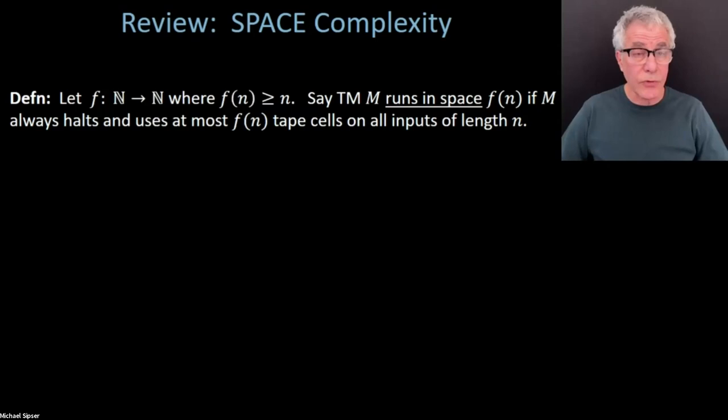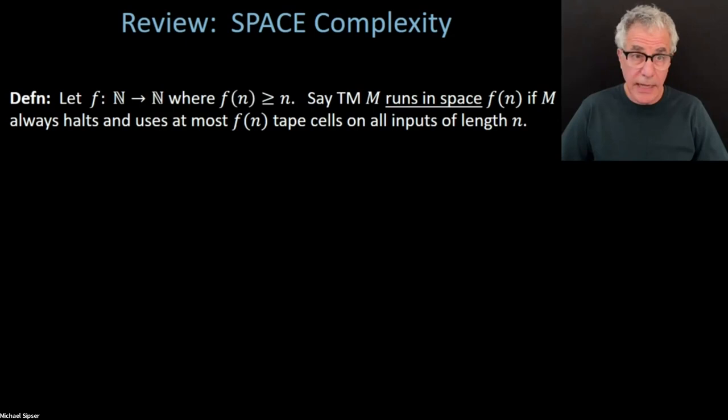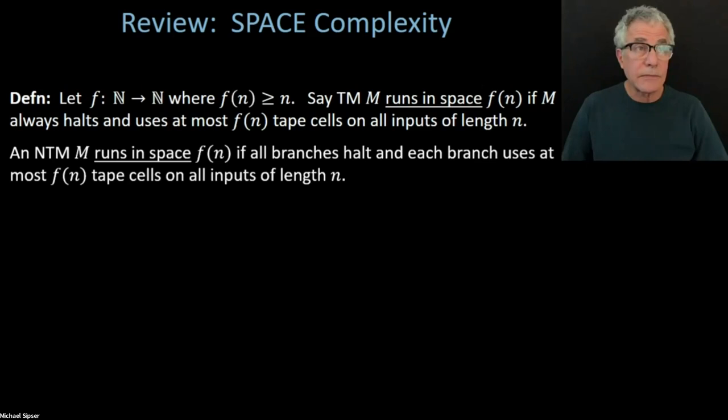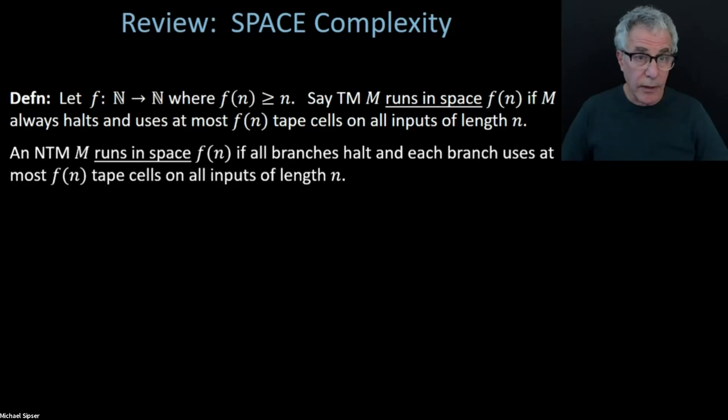A little bit of a review. We defined what we mean by a Turing machine to run in a certain amount of space — it uses at most f(n) tape cells on every input of length n. Similarly, a non-deterministic Turing machine does the same, but every branch of its computation has to use at most that bounded amount of tape cells.